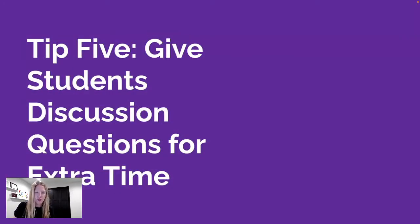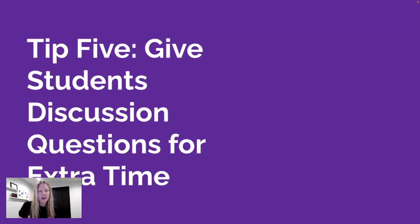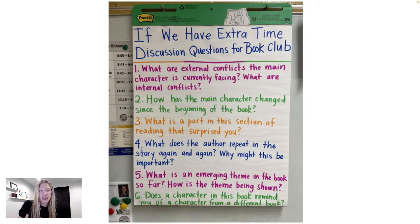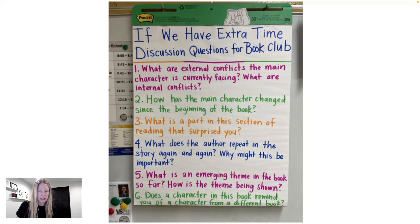Tip five is to give students discussion questions for extra time. It's inevitable that some groups will go really fast and then sit there awkwardly. This anchor chart is a safety net so they don't take other groups off task. Students can look up a question and discuss it as a group if they have extra time. Sample questions include: how has the main character changed since the beginning of the book? What is a part in this section of reading that surprised you? These can be any types of questions you think students would engage with.